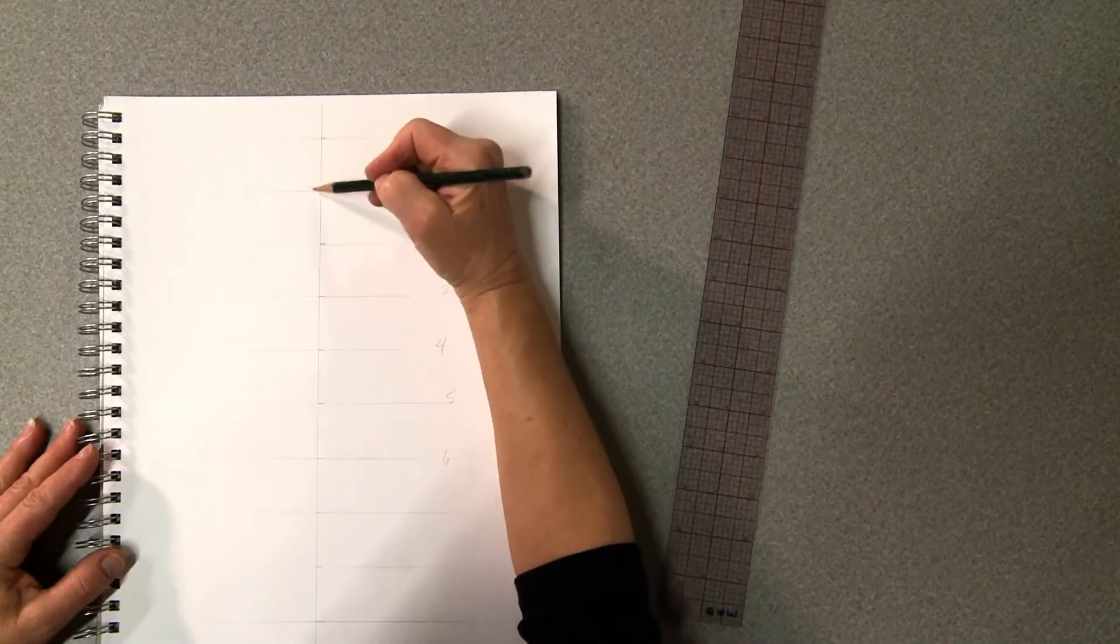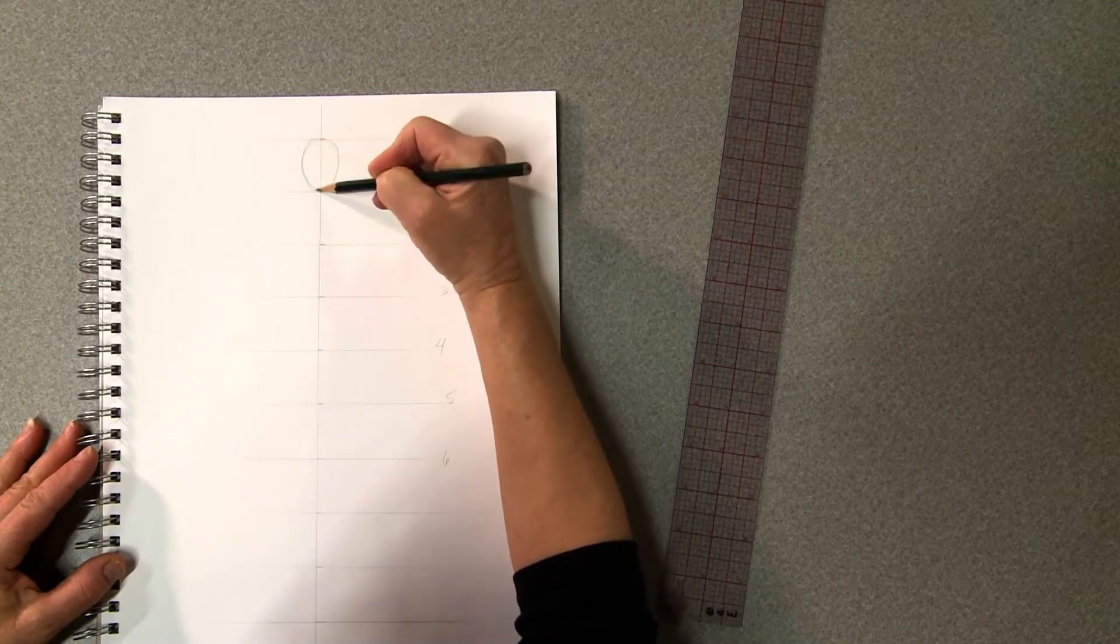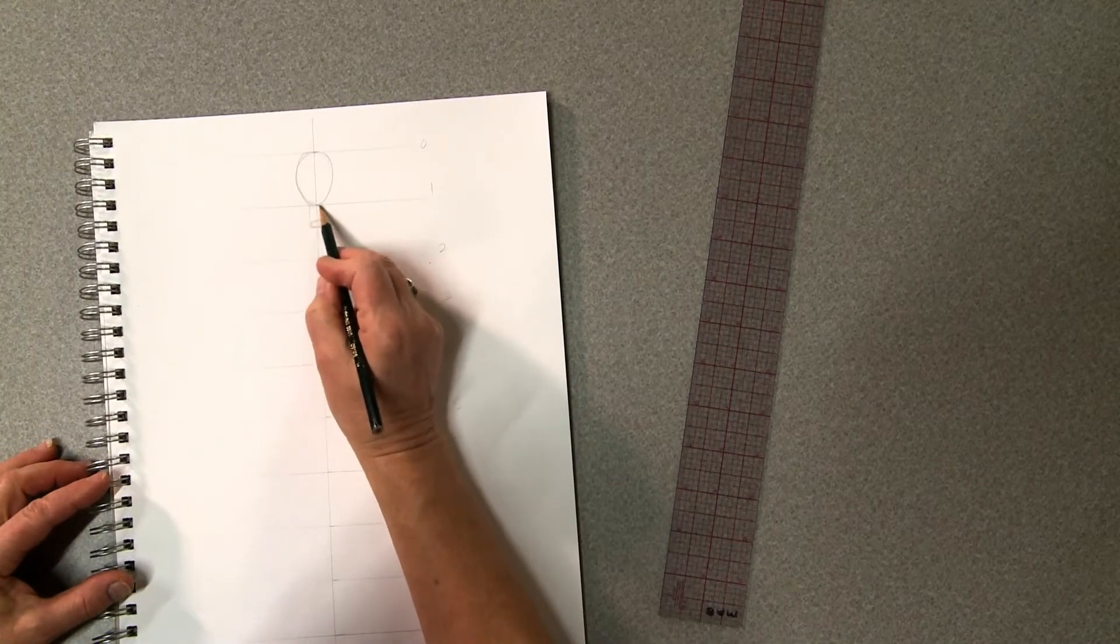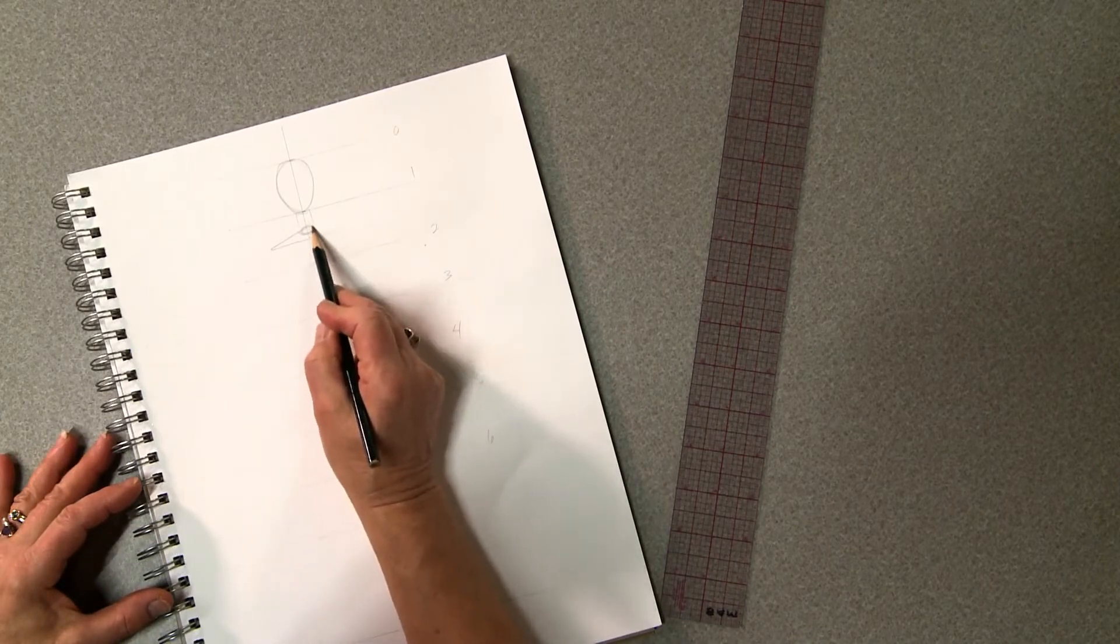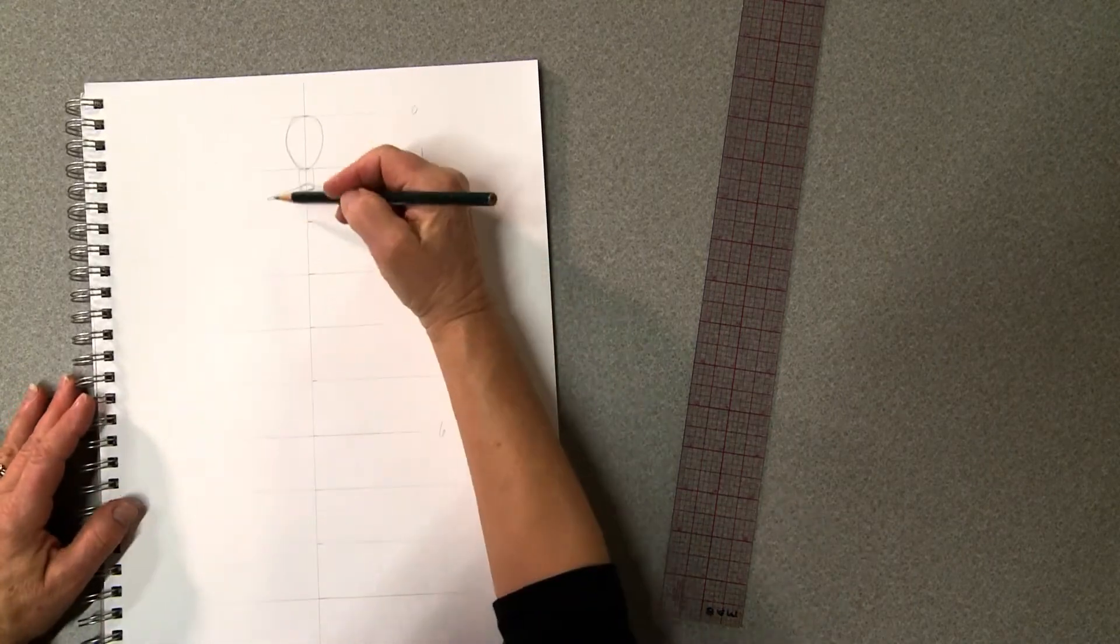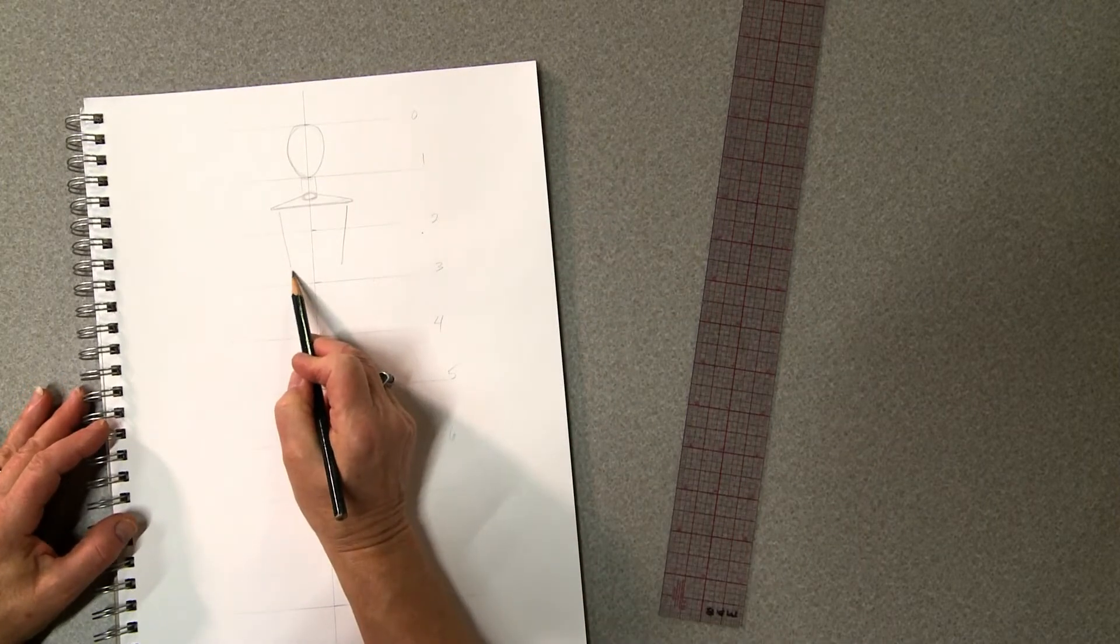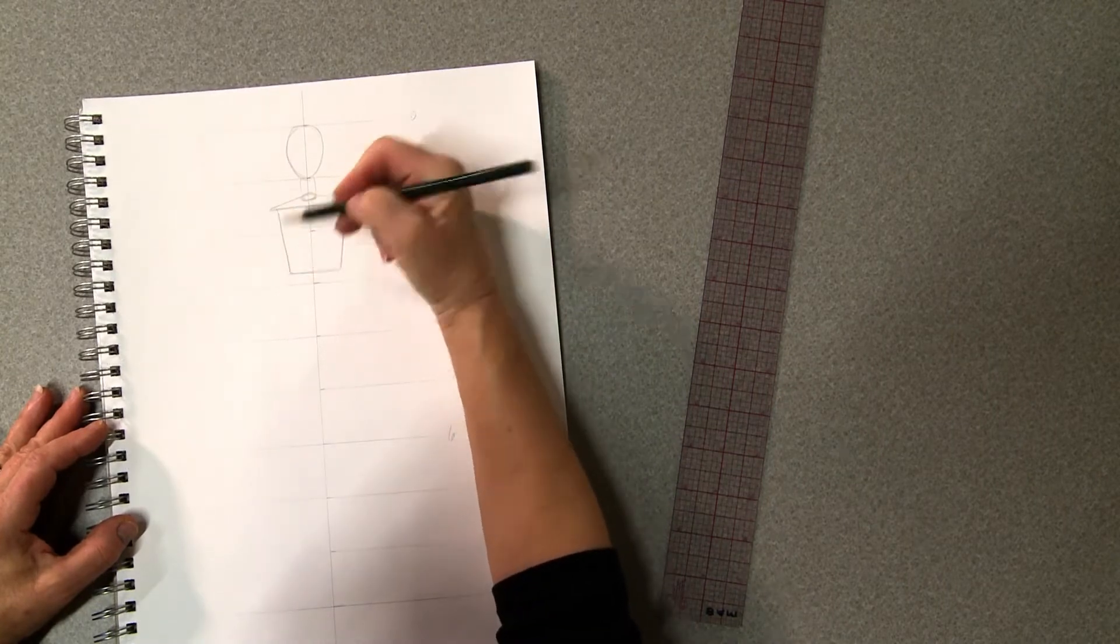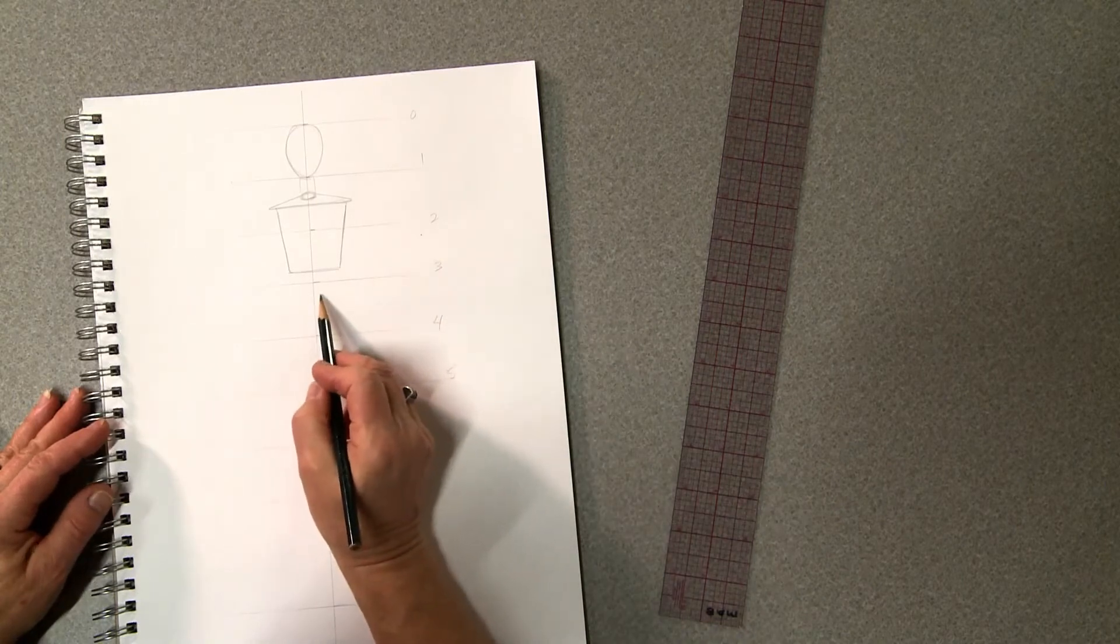Just like we did in the first video, start with a beautiful egg shape for the head. Then draw the neck as a soup can. The shoulders are a smashed coat hanger. And we drew a waist basket. We're going to make it just a little bit longer this time as we stretch to nine heads rather than the first video which was eight and a half heads.